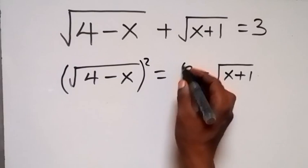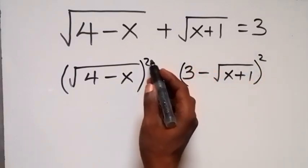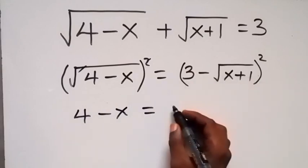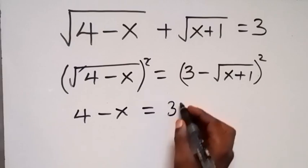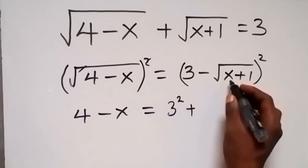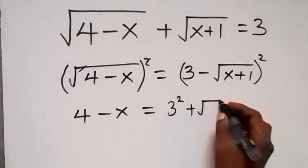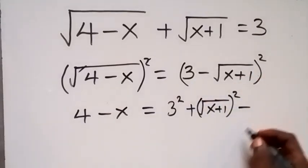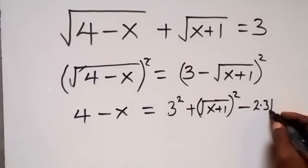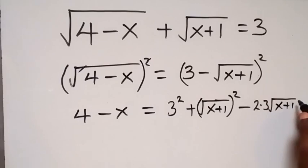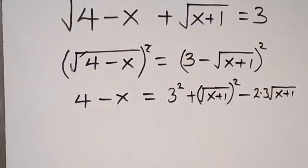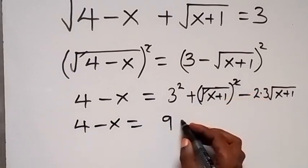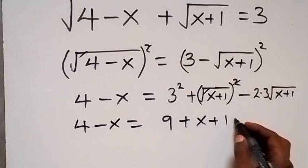We square both sides. On the left side, the square cancels the square root and we have 4 minus x. On the right side, when we expand it, we get 3 squared, plus root(x plus 1) squared, minus 2 times 3 times root(x plus 1). This simplifies to: 4 minus x equals 9 plus x plus 1 minus 6 root(x plus 1).